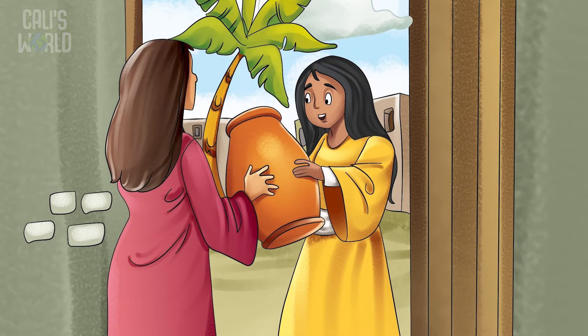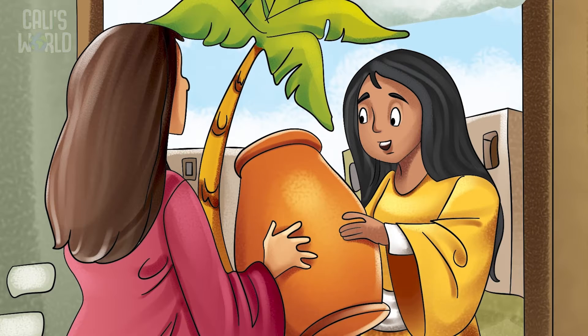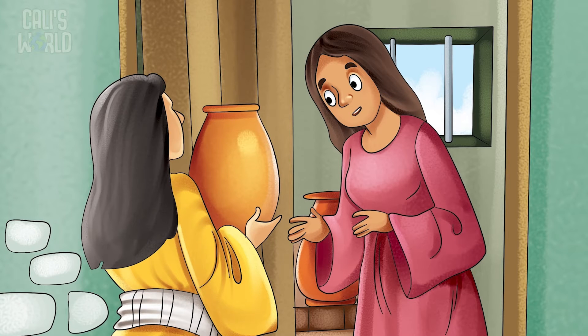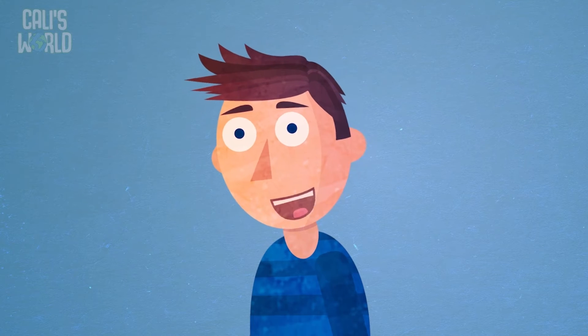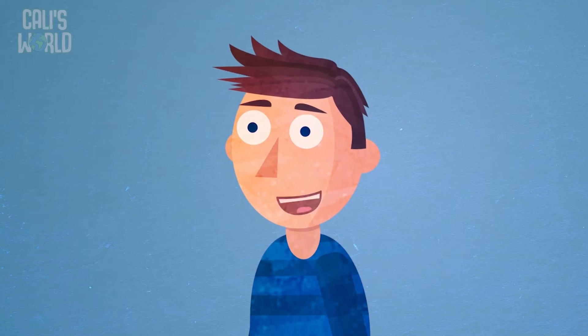Elisha told the woman to do something strange. Go around and collect empty jars from anyone she knows. She was to get as many jars as she possibly could. Then, Elisha told her to go back to her house and close the door.